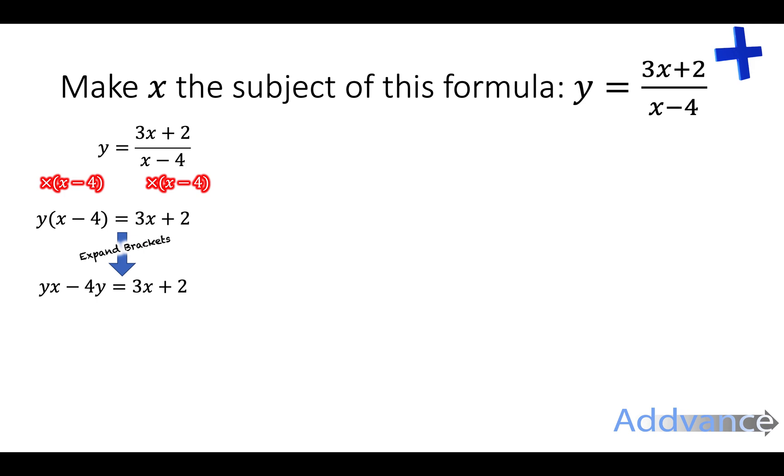Now, I expand the brackets and I get yx minus 4y equals 3x plus 2. For that one I just do y times x is yx. y times minus 4 is minus 4y. I want to move the minus 4y to the other side. So I add 4y to both sides. And I want to move the 3x to the other side. And to do that, I subtract the 3x from both sides. yx minus 3x equals 2 plus 4y.